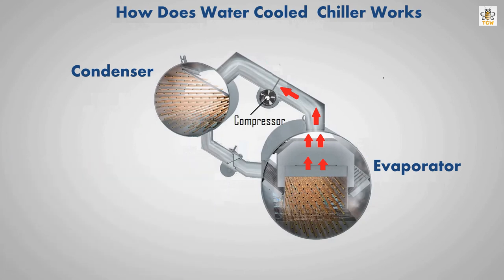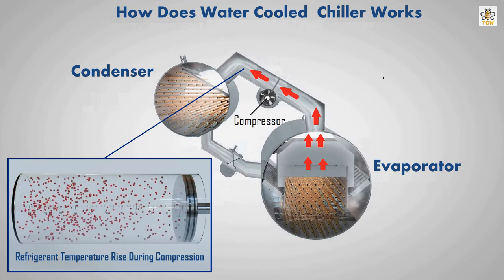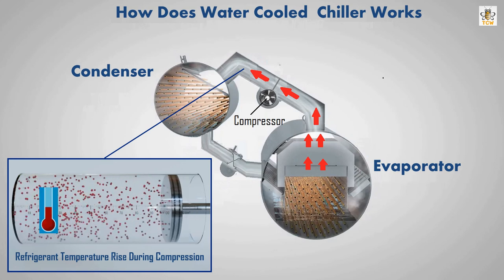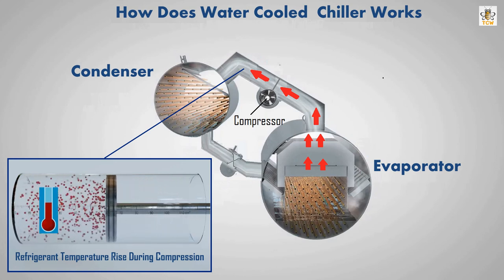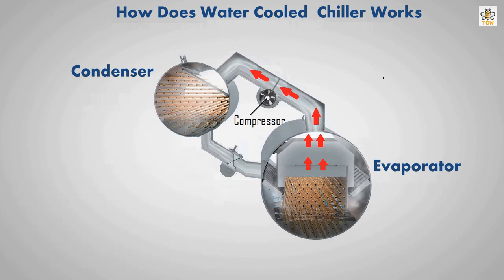A compressor is used to increase the refrigerant pressure. According to the material characteristics of the refrigerant, when the refrigerant is compressed, its temperature increases. The high temperature refrigerant is then blown into the condenser tank.